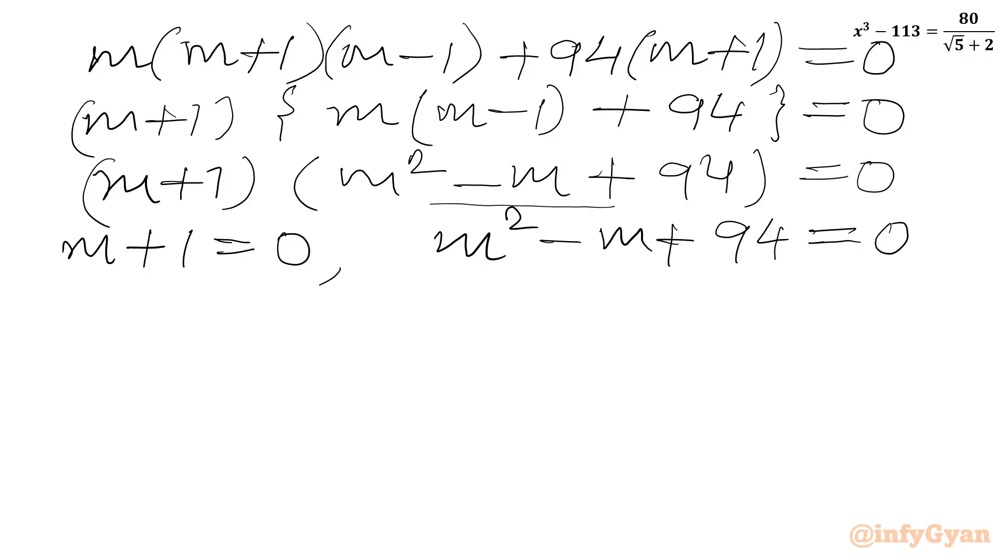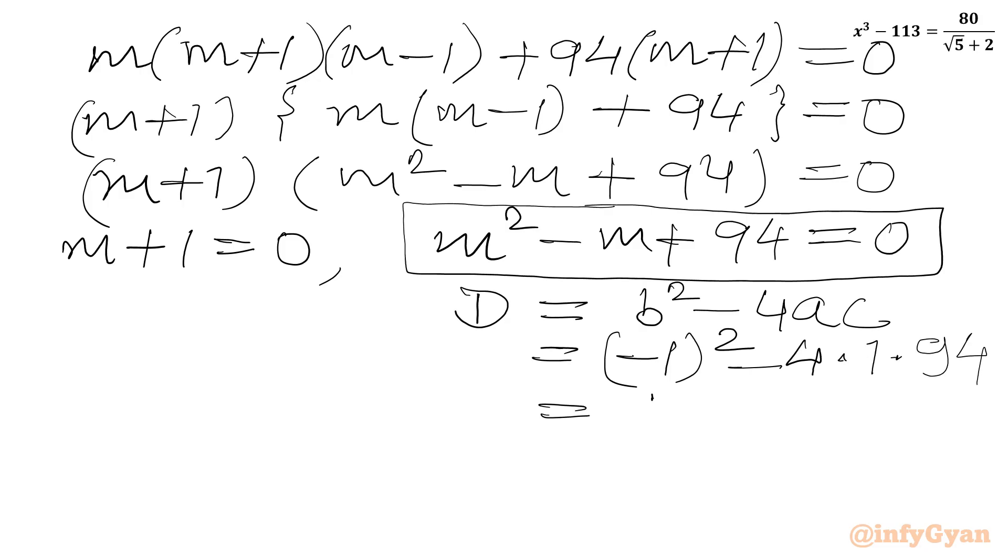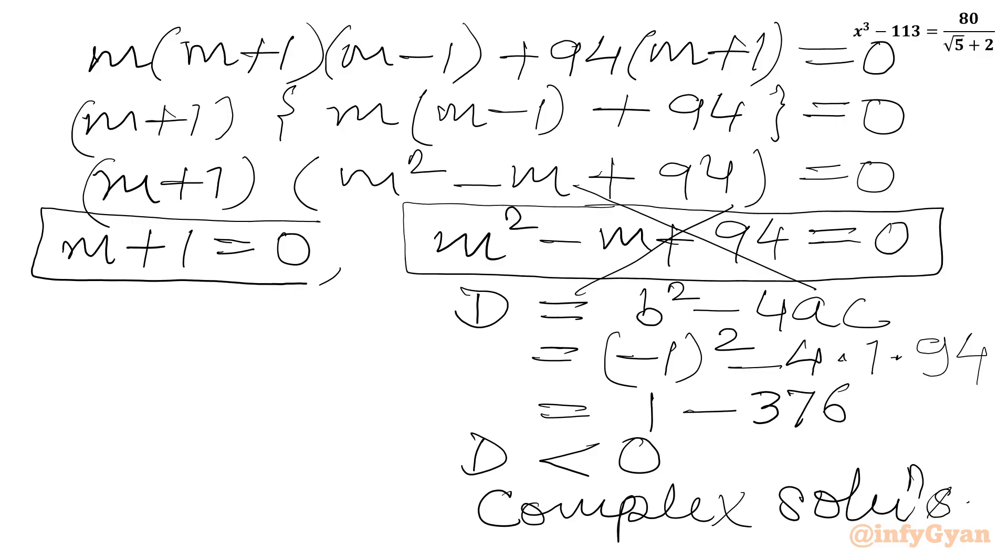So let us solve this quadratic equation first. I will check the discriminant first. So the value of d will be b square minus 4ac. So I will write minus 1 square minus 4 times 1 times 94. So our discriminant is coming out negative. We can write this equation will generate complex solutions. So we will reject this quadratic as we are looking for real solutions. So m plus 1 equal to 0. Or we can write m equal to minus 1.